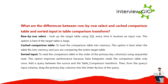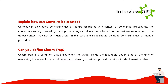What are the differences between row-by-row select, cached comparison table, and sorted input in the table comparison transform? Row-by-row select looks up the target table using SQL every time it receives an input row — best if the target table is large. Cached comparison table loads the comparison table into memory — best when the table fits into memory and you are comparing the entire target table. Sorted input reads the comparison table in the order of primary key columns using sequential read, which improves performance because Data Integrator reads the comparison table only once. Add a query between the source and the table_comparison transform, then drag the primary key columns into the order-by box.